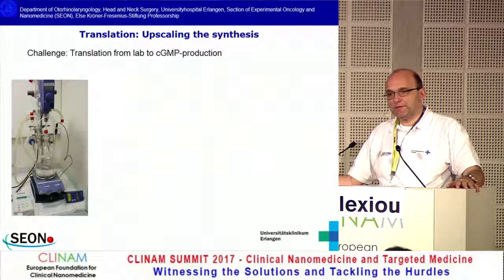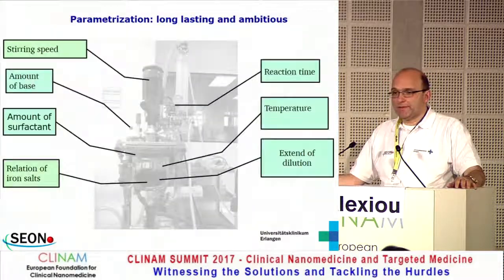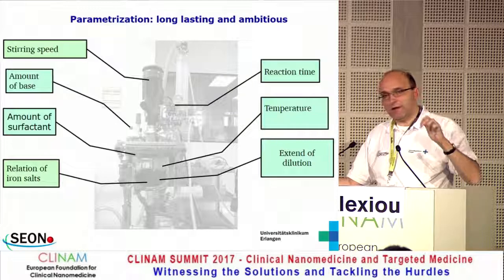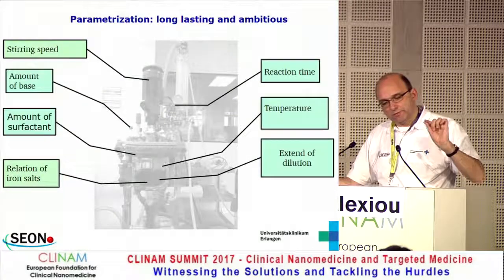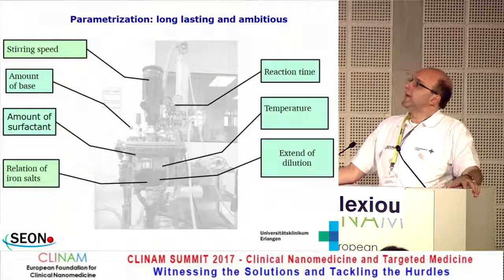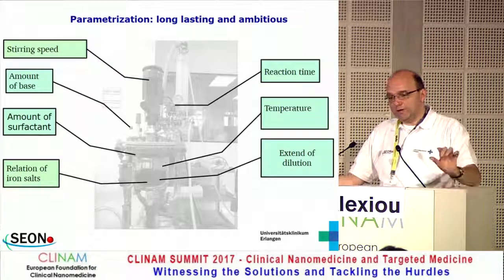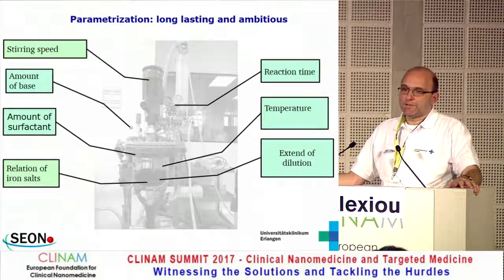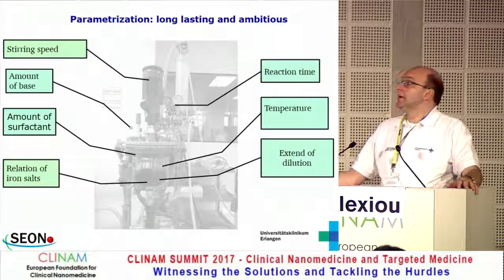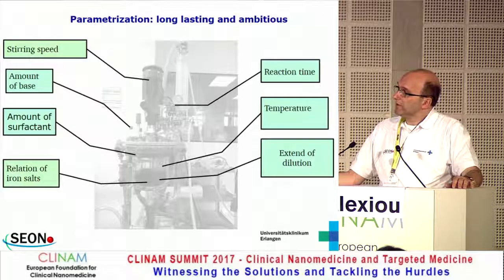One really big issue, due to time restriction, is the translation — the upscaling of synthesis from lab scale into GMP. We do have facilities in Erlangen to do this, but they are really ambitious and long-lasting. Small changes in the production can lead to big problems, and you have to detect them. You have to be aware of the critical issues to transport basic research into clinical trials, especially the synthesis. We are happy to have the infrastructure and are working very hard on this.